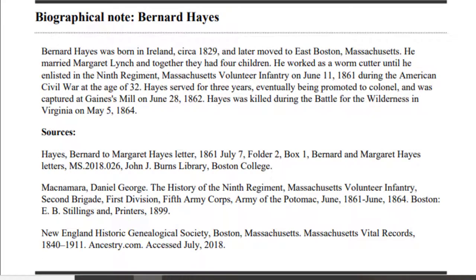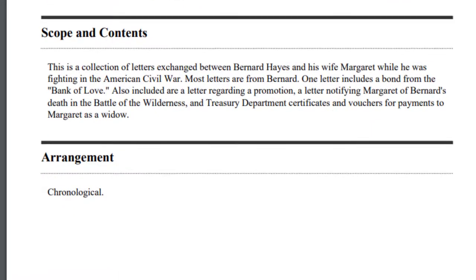The historical note, or biographical note, provides background information on the creator of these records. Who is this person or organization? When and where did they exist? What types of things were they involved in? What other names or organizations is it important to know about when looking at the records? Note how archivists cite their sources so that you can look for more information.